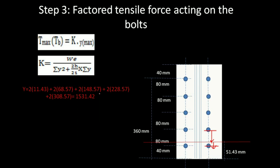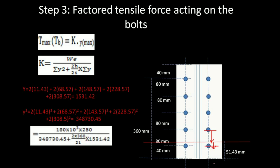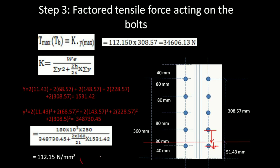We calculate Σy and Σy² using all y distances from the neutral axis. Substituting all values, we get the value of k. Then y_max is the distance of the uppermost bolt from the neutral axis, which is 308.57 mm. Therefore, TB = k × y_max = 34,606.13 N. Step 3 is now complete.